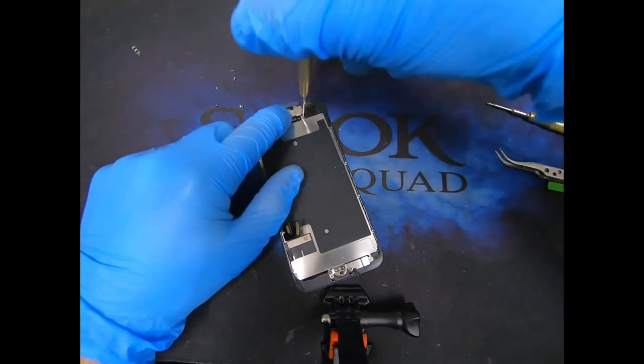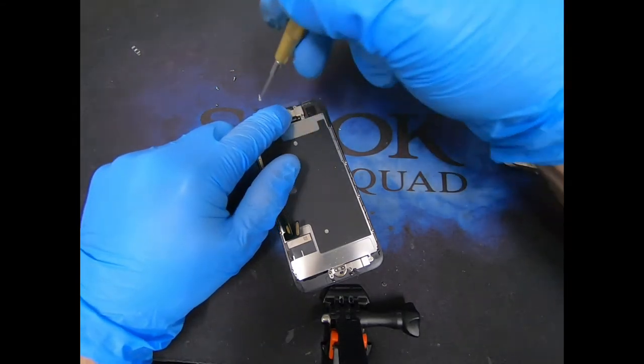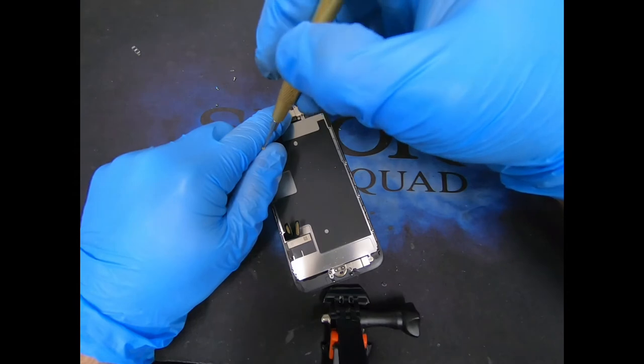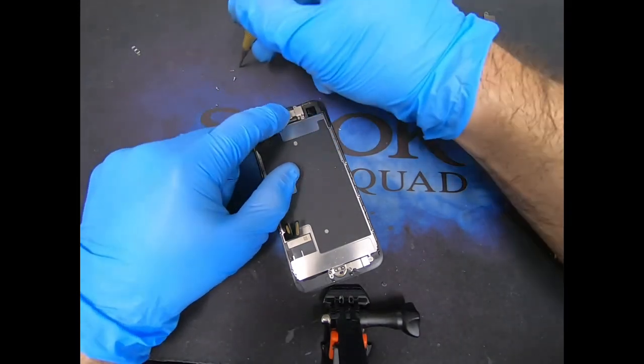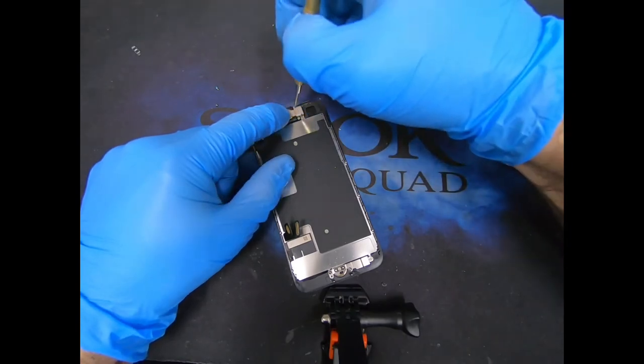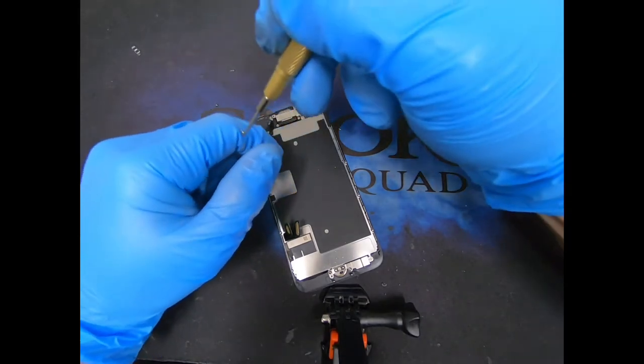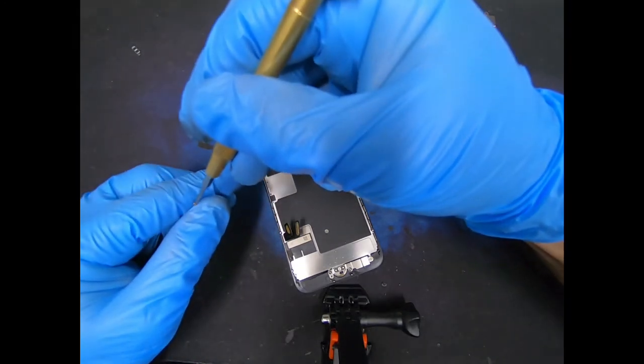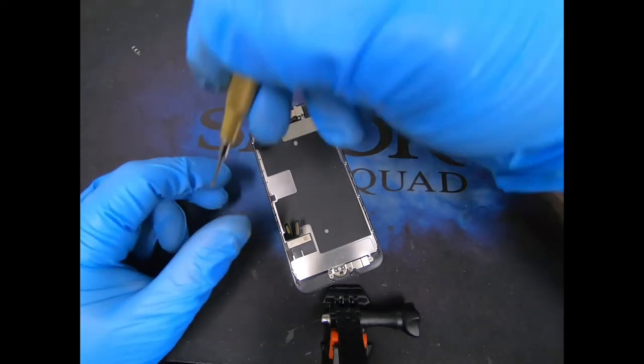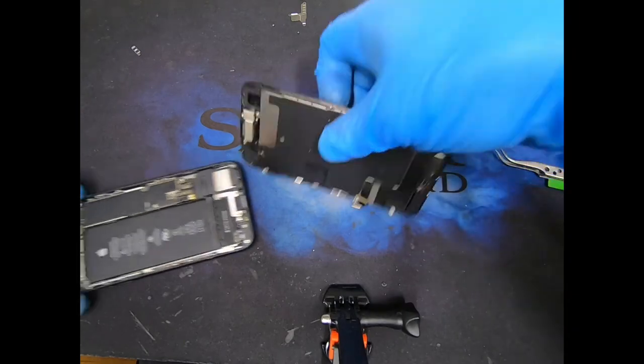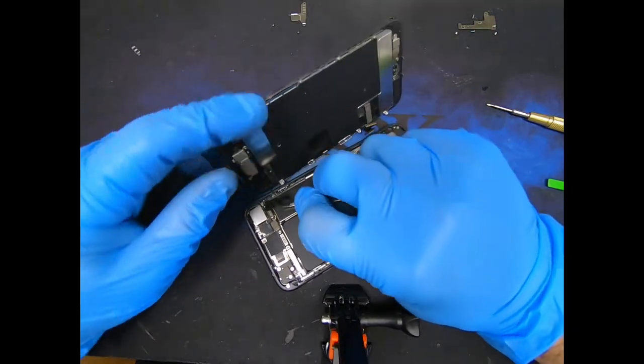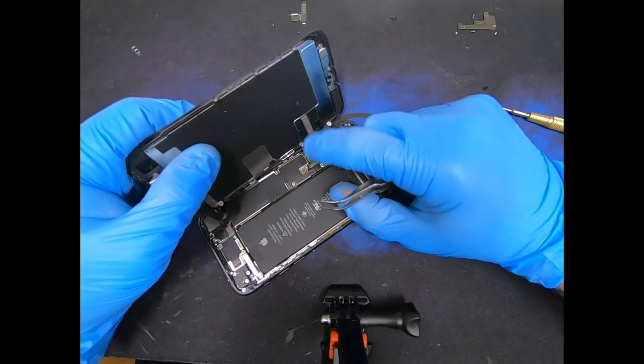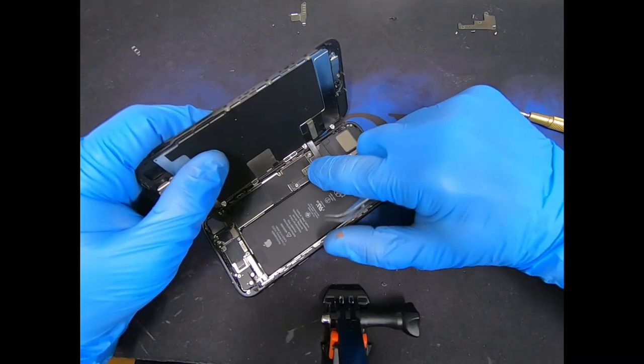Remember these screws are different sizes, so you do have to have them in order. I hope that one's already on the screen. So we're going to connect our front-facing camera first, home button connector, LCD touch connector, and battery.